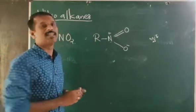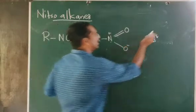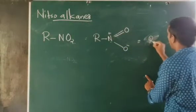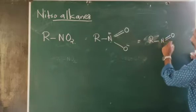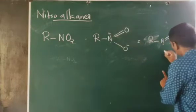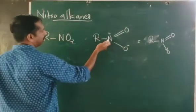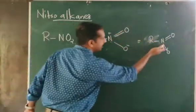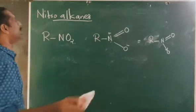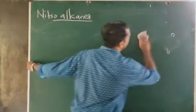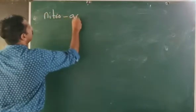That pair of electrons is donated to oxygen, and hence a coordinate bond is formed. Since nitrogen is donating a pair of electrons, nitrogen gets a positive charge and oxygen gets a negative charge. So RNO₂ can be written as R–N⁺ with a double bond O and O⁻, or alternatively as R–N(=O)–O⁻. This coordinate bond is the reason nitrogen is positive and oxygen is negative. This is the nitro alkane structure.